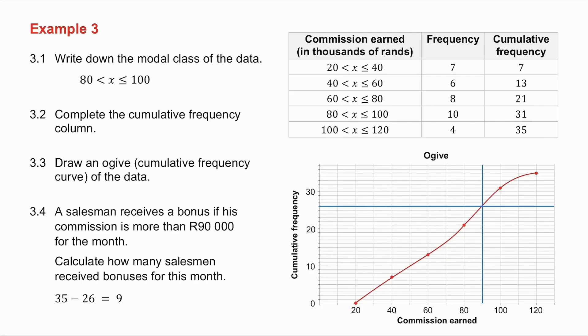3.4. A salesman receives a bonus if his commission is more than 90,000 rand. So go up from 90,000 rand to the ogive, and go across. And you will notice you get approximately 26. Now the people who get more than 90,000 is this lot here. How many are there? Well, there are 35 in total, minus the 26 that we've read off. In other words, there are 9 salesmen.